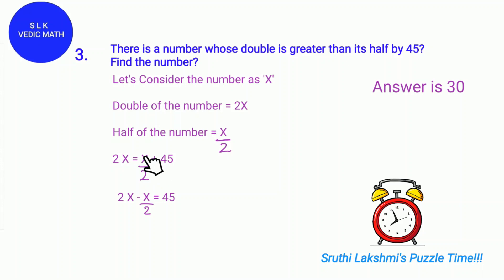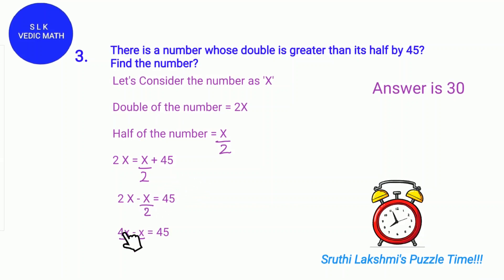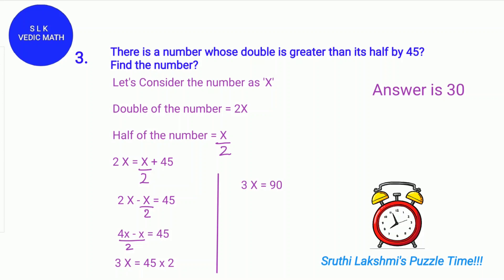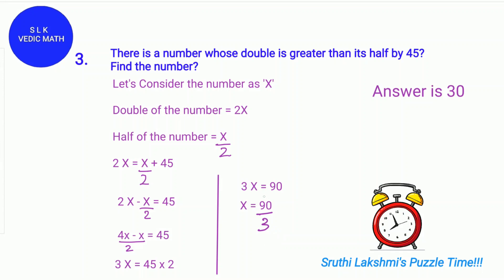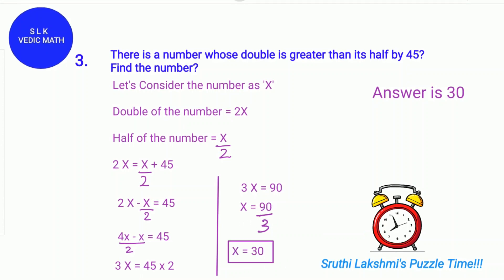When we bring x divided by 2 to the other side, it becomes 2x minus x over 2 equals 45. So it's 4x minus x divided by 2 equals 45. Then 3x equals 45 times 2, so 3x equals 90. And x equals 90 divided by 3, which gives x equals 30.